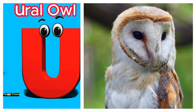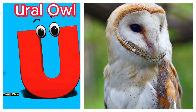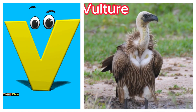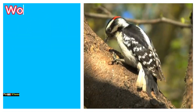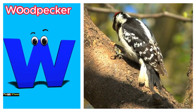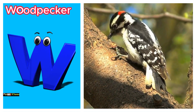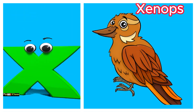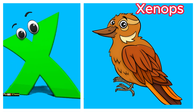U is for ural owl. Uh, uh, ural owl. V is for vulture. V, v, vulture. W is for woodpecker. W, w, woodpecker. X is for xenops. Z, z, xenops.